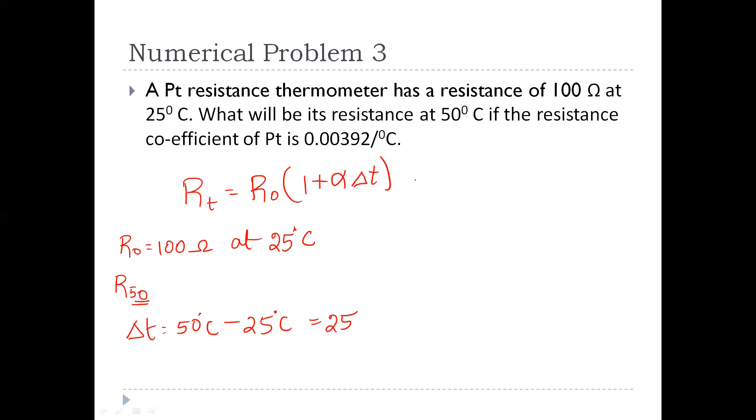We can substitute here. I will be getting RT is equal to 100 into 1 plus alpha. Alpha value is 0.00392 into 25 because delta T is 25. If I solve this, I will get the value for RT as 109.8 ohms. So resistance at 50 degree Celsius is 109.8 ohms.